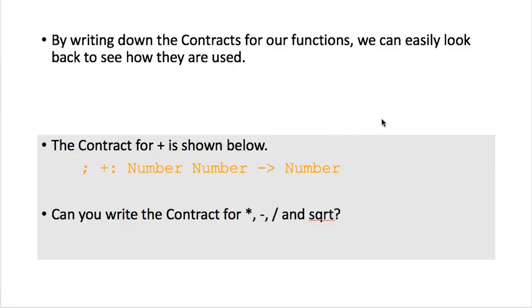By writing down the contracts for our functions, we can look back and see how they are used without looking up the documentation. Here's the contract for the plus function. It takes in two numbers and gives back a number, so the domain is number, number and the range is a number. Why don't you pause the video and in your video notebook write the contract for multiplication, subtraction, division, and square root. If you don't know what square root is, just guess at what the contract is going to be.